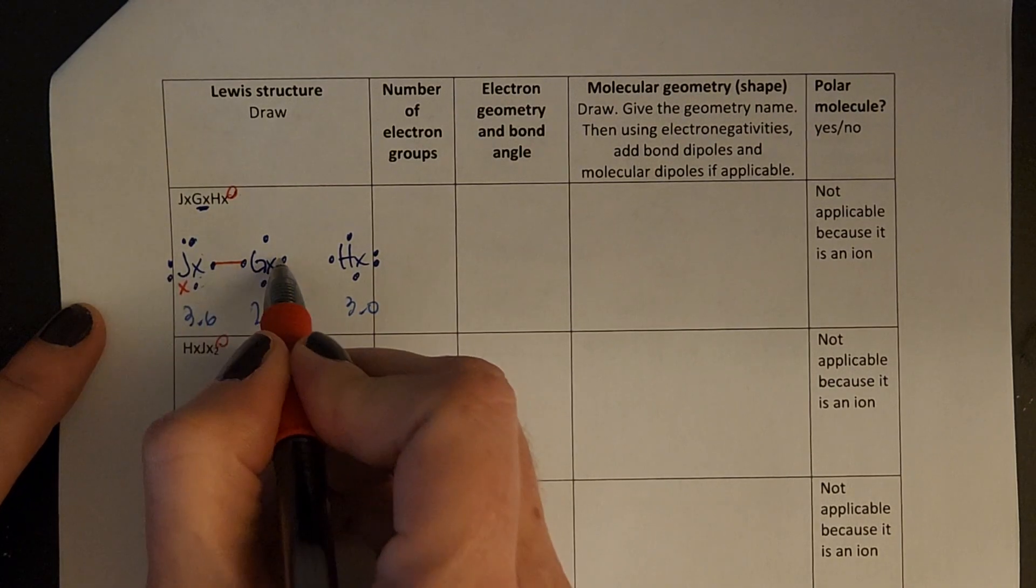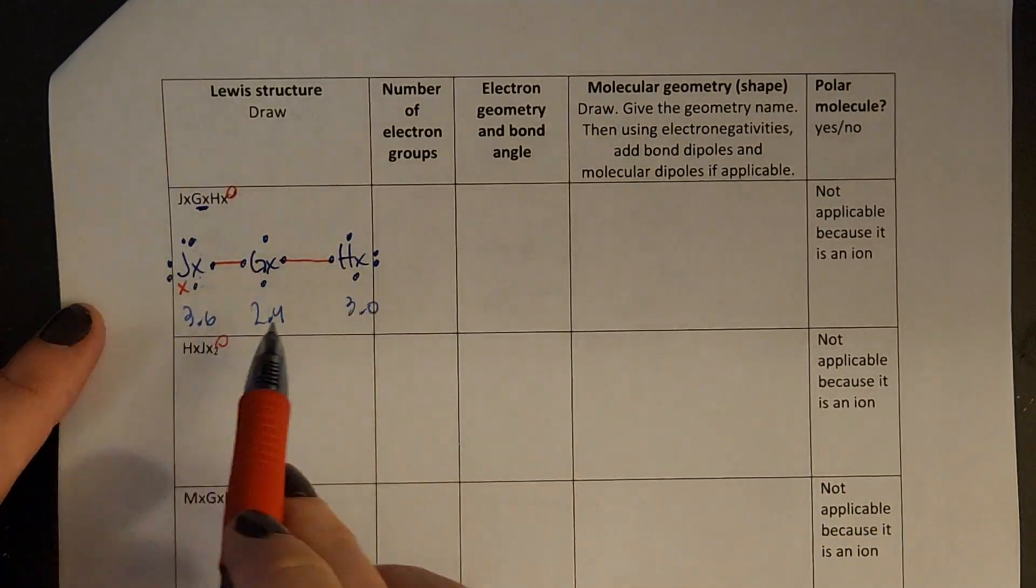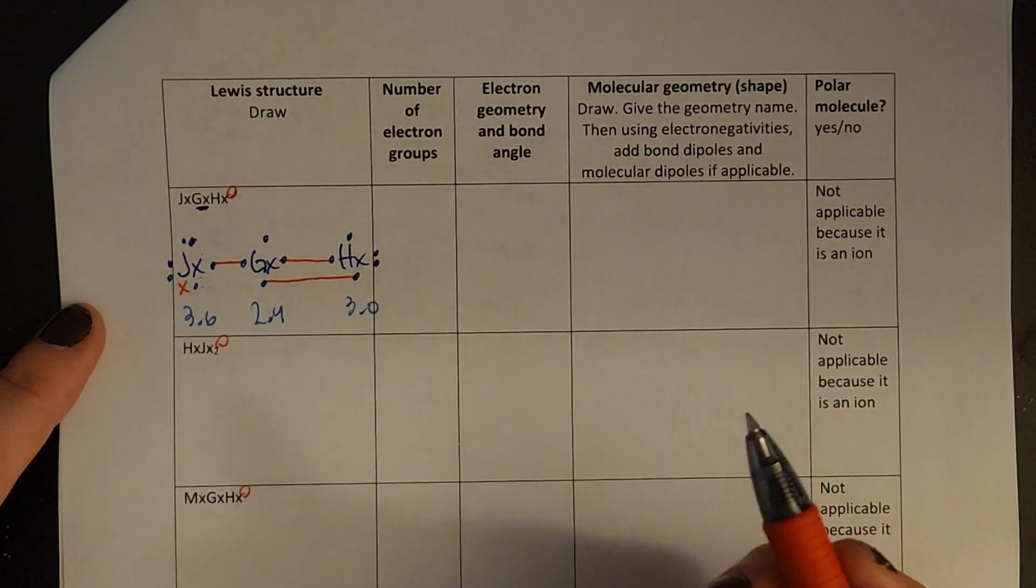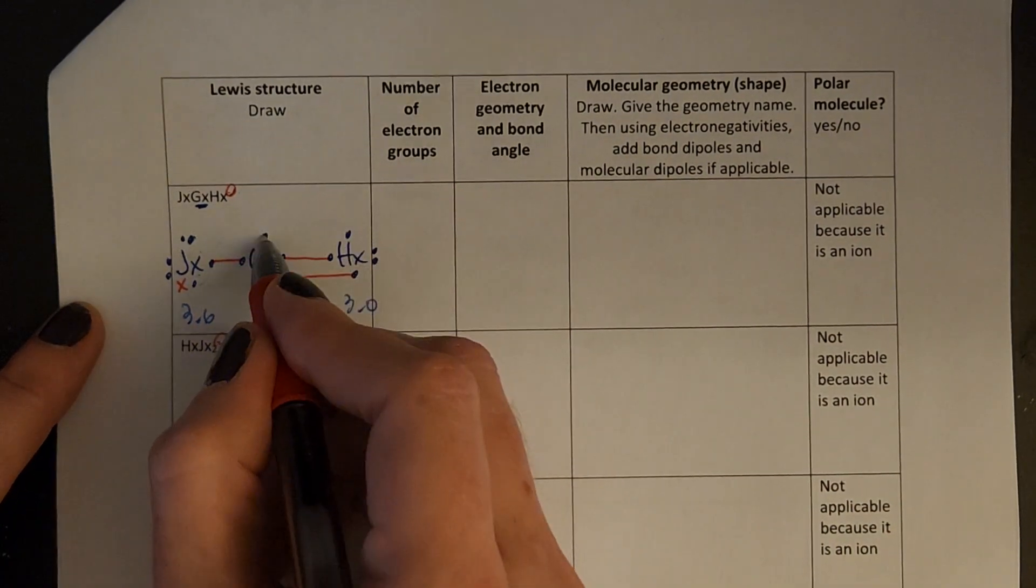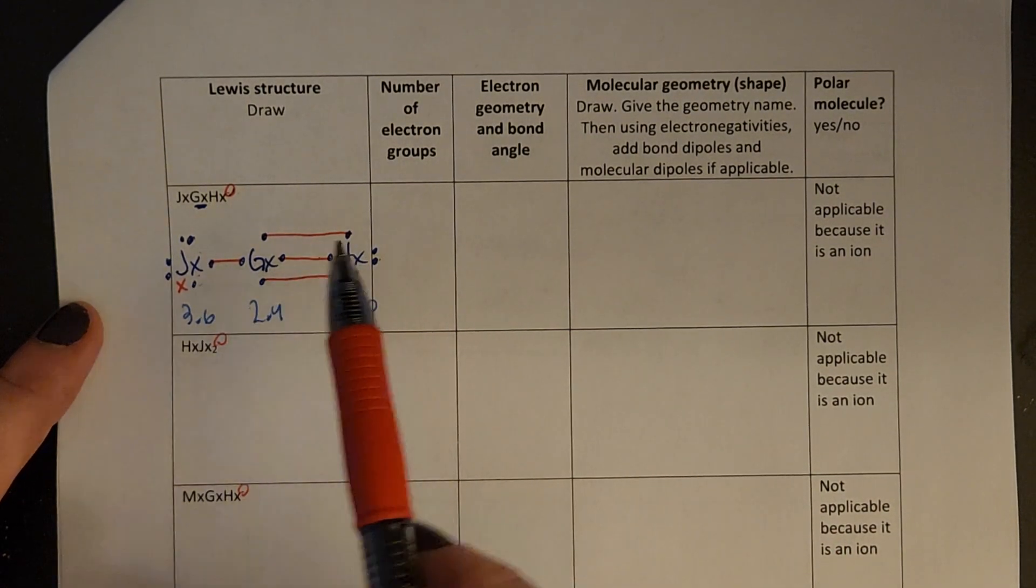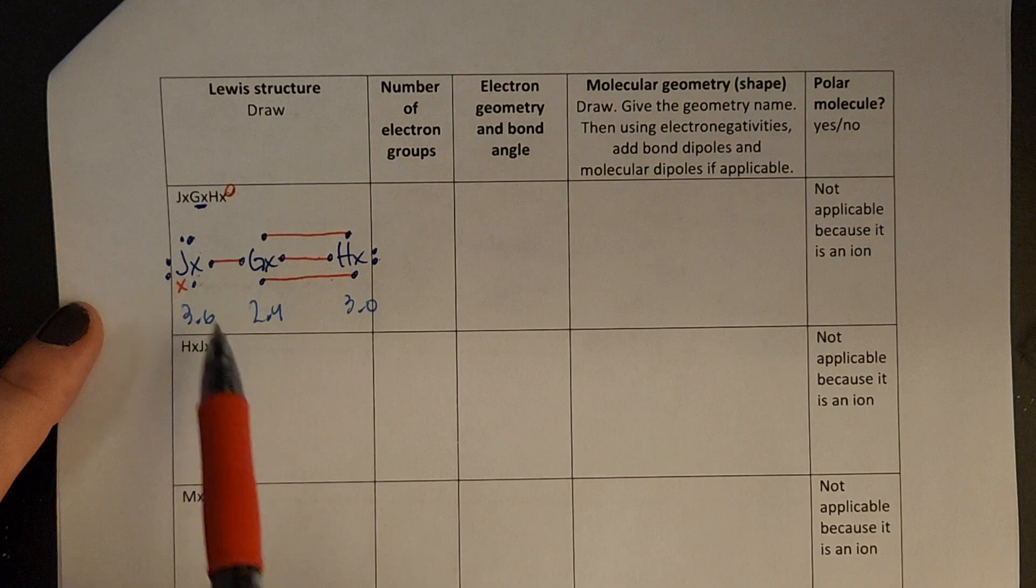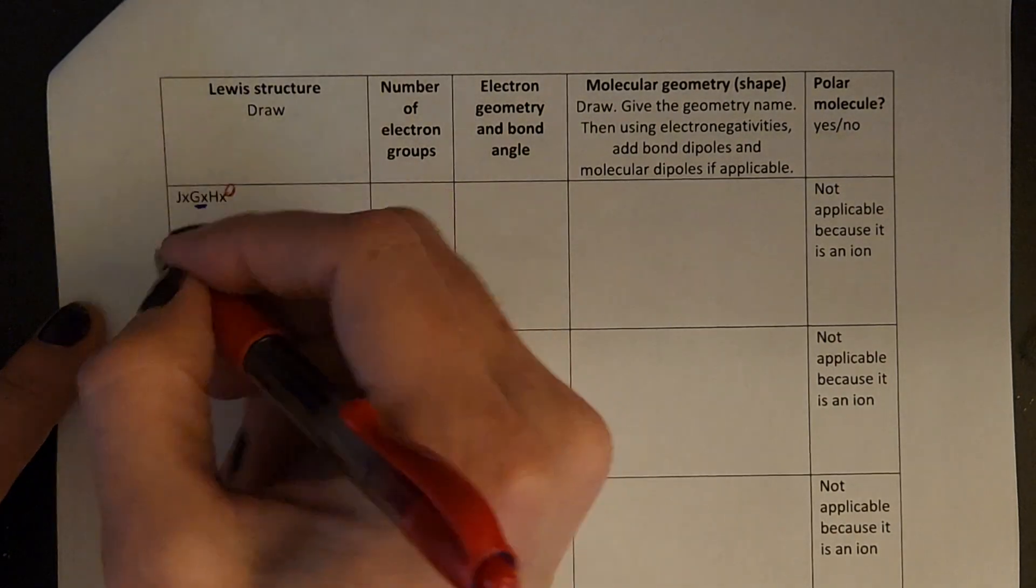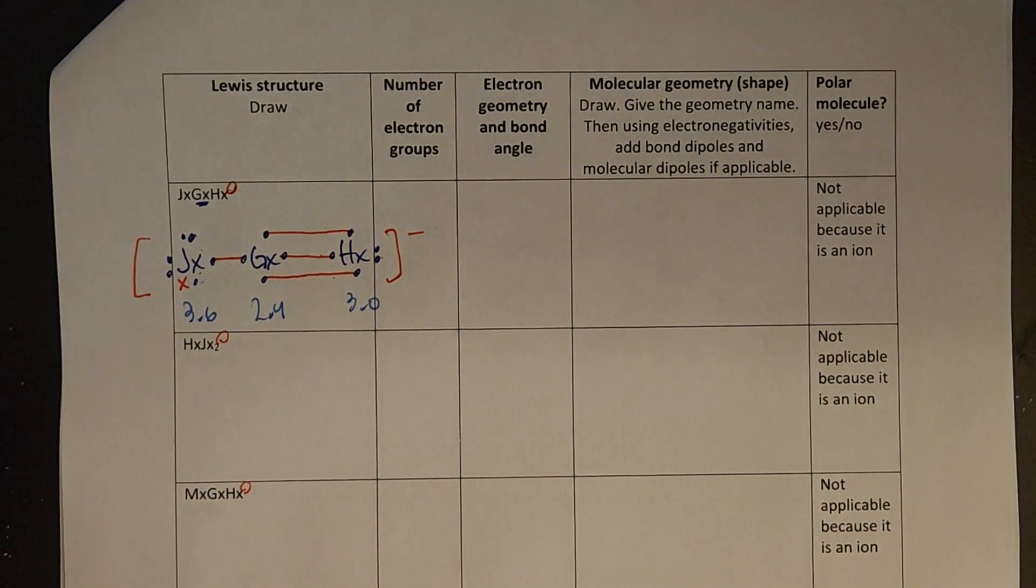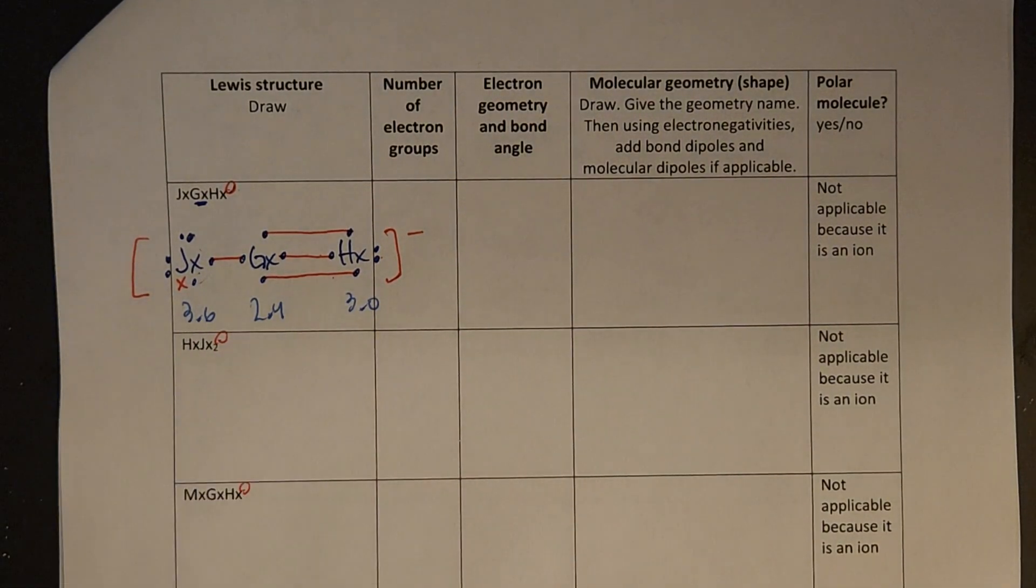Now I can connect my bonds, so start with single, and then look around, see if there's any unpaired electrons across from each other. So those can connect, unpaired, unpaired. You can always check that you've got an octet on everything, so 2, 4, 6, 8, 2, 4, 6, 8, and 2, 4, 6, 8. And then don't forget, with ions, you need some brackets and that charge written. So that would be a correct Lewis structure here.